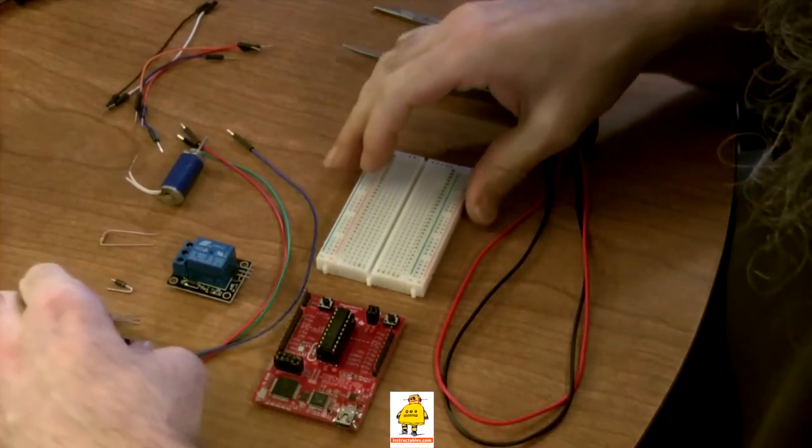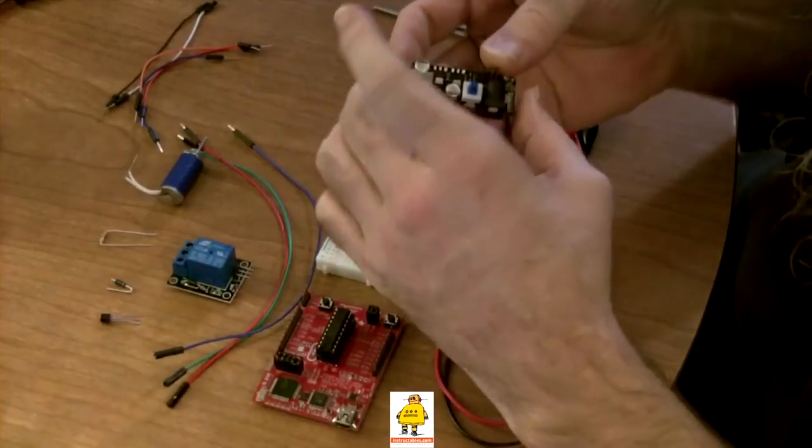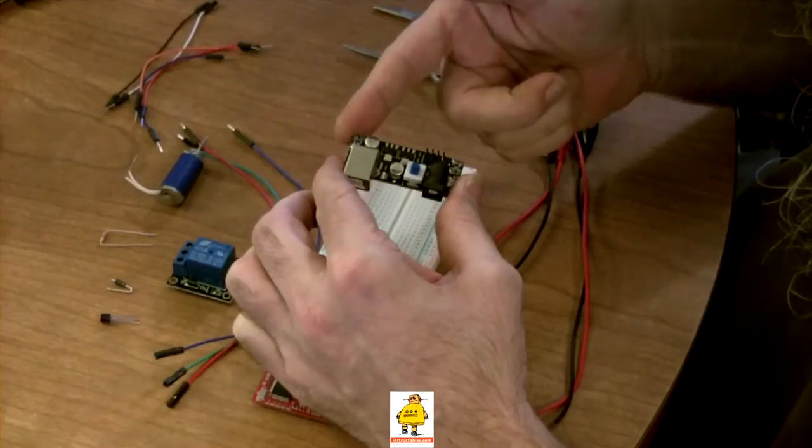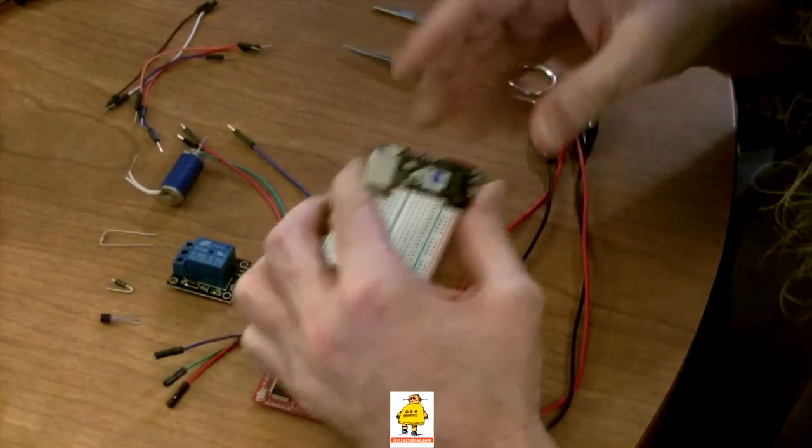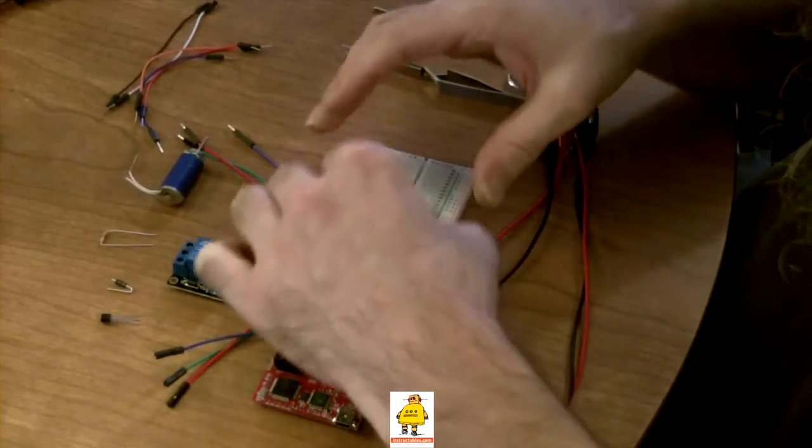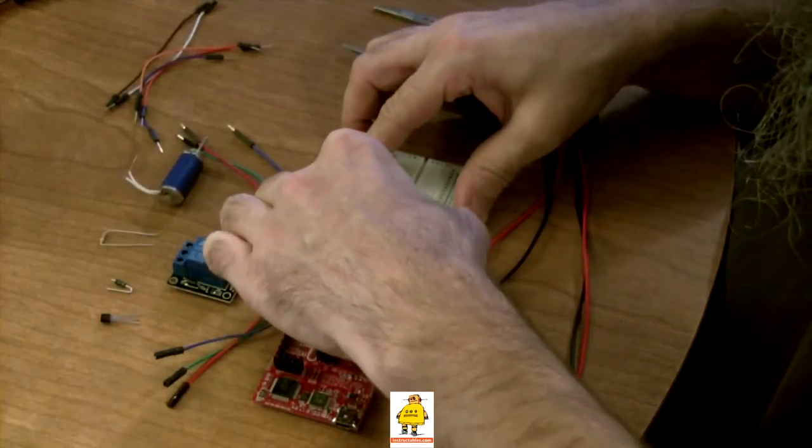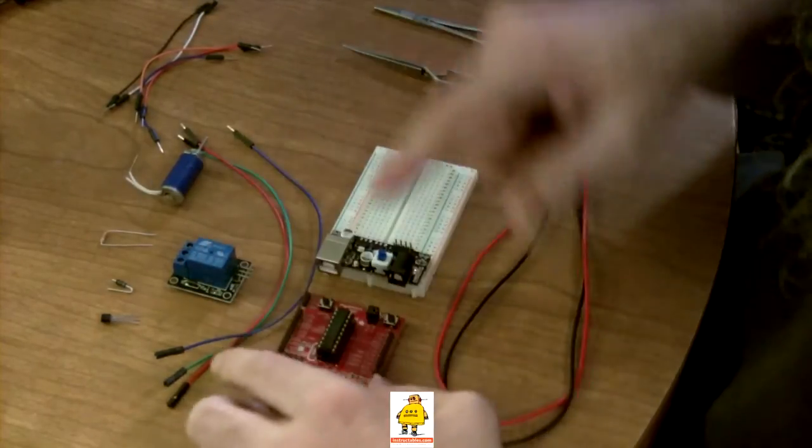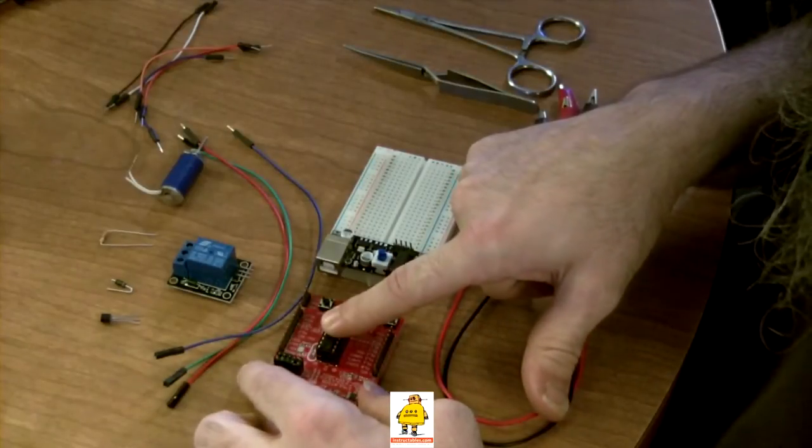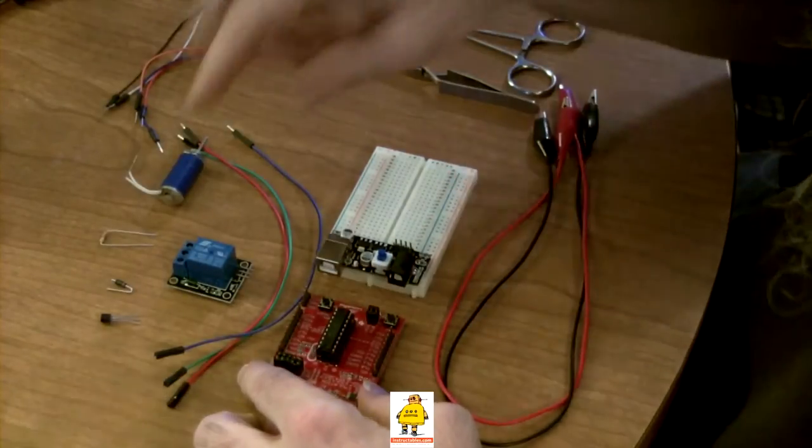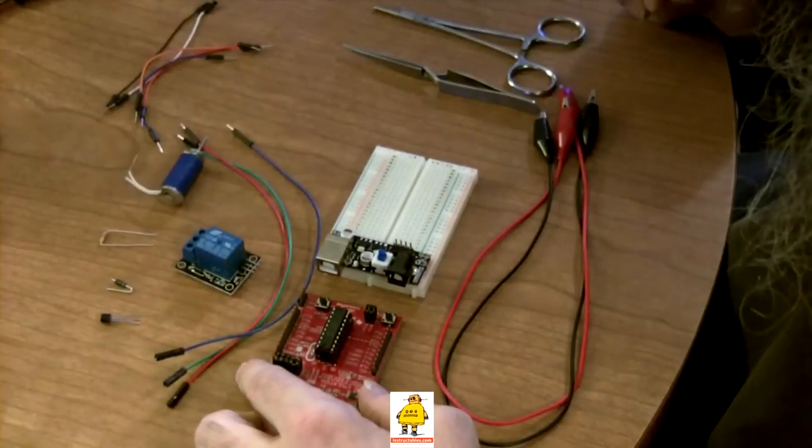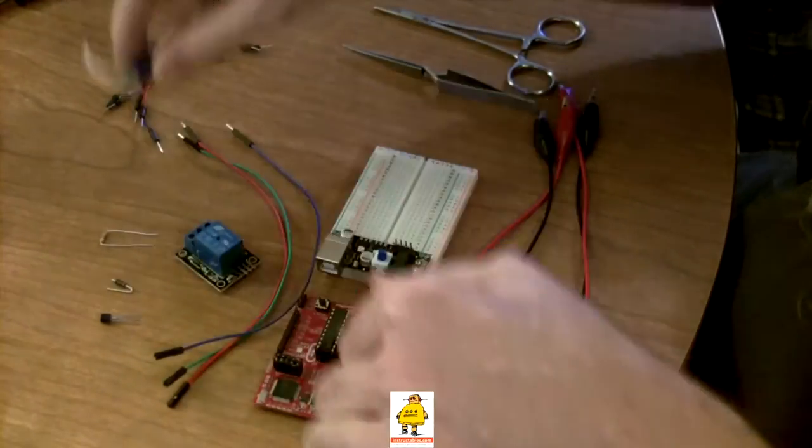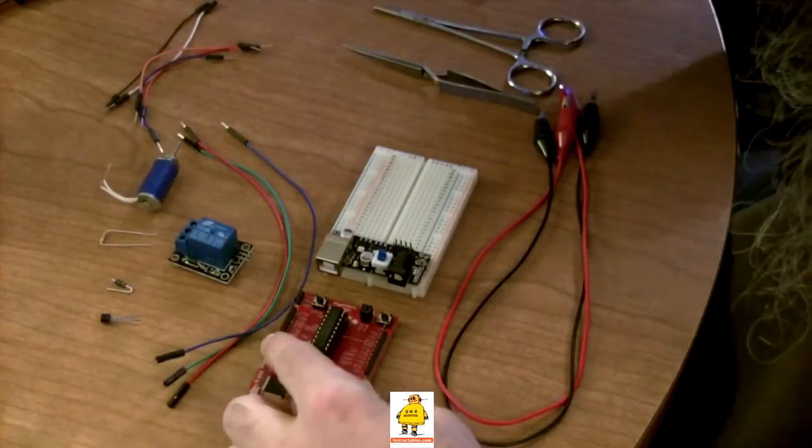We're going to start by putting our dual power supply on our board. This is 3.3 volts. This is 5 volts DC. We need dual voltage here because our launch pad runs on 3.3 volts. Our relay runs on 5 volts. The relay is going to control 12 volts to feed the solenoid.